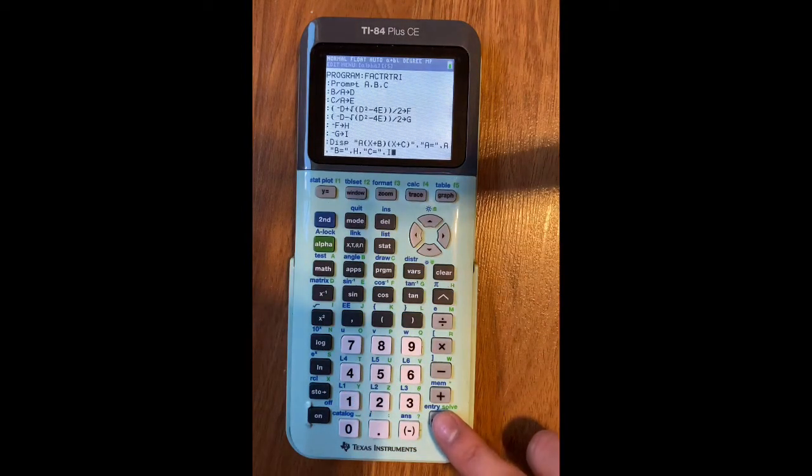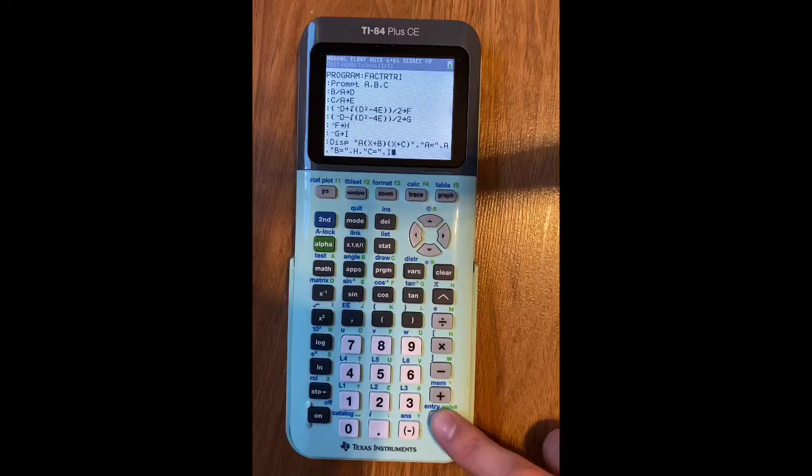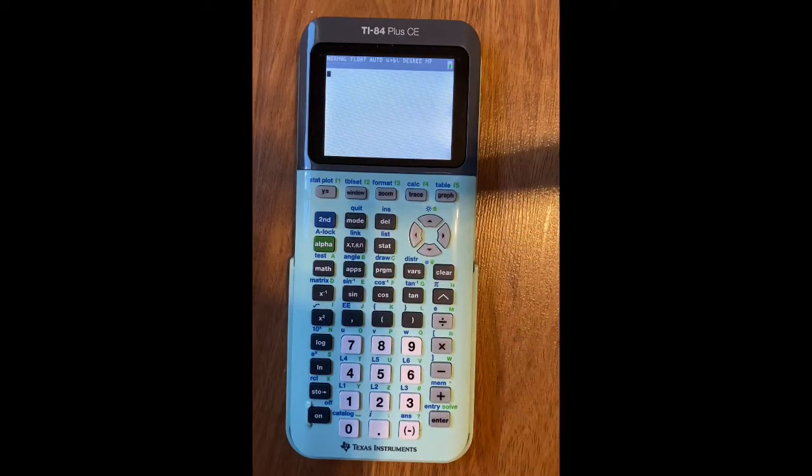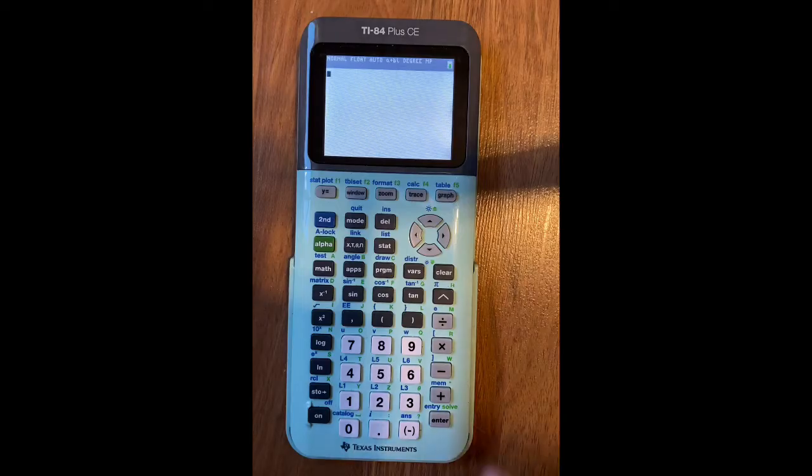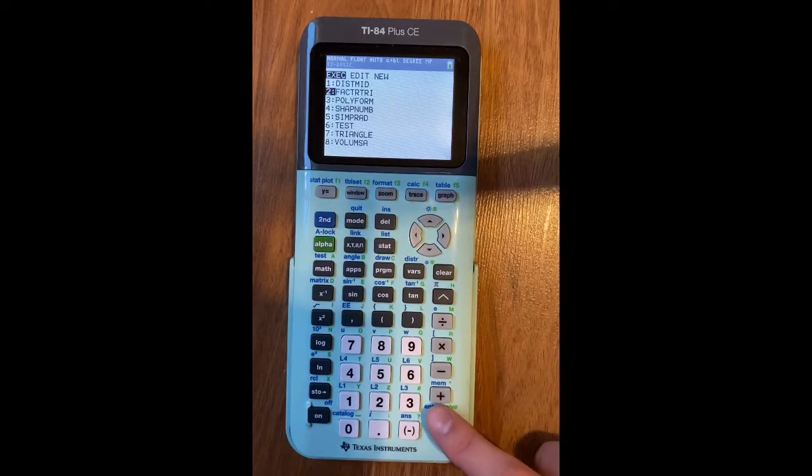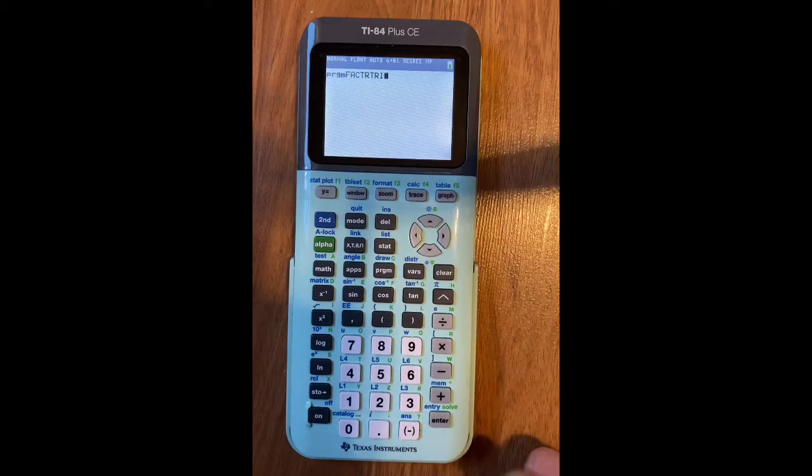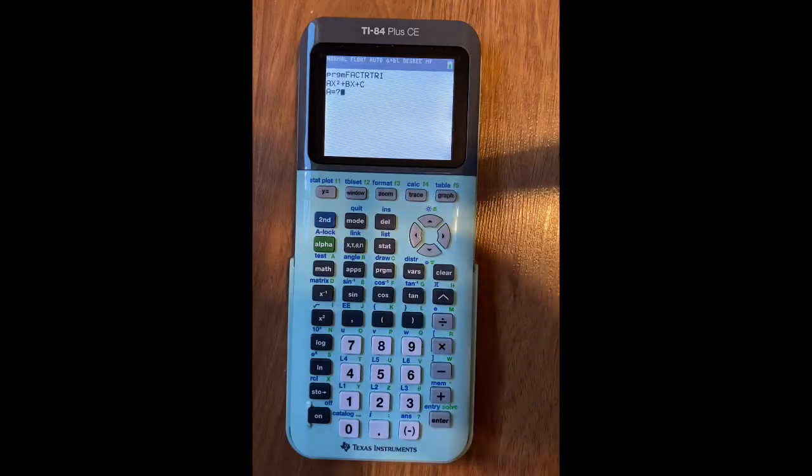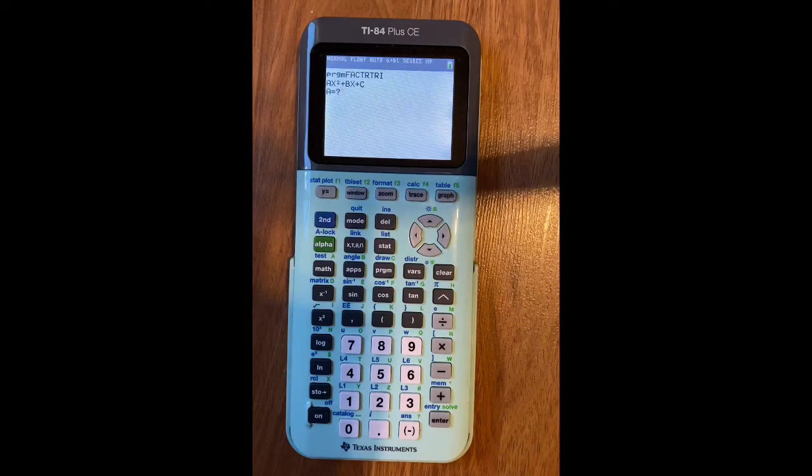And that should be the end of your program, so then you will second and quit out of it. And then to test it, you can press program, then go to wherever factor tri is, press enter, and then it'll show up with this screen. And then here are two different equations that you should try to test it, make sure it works well.